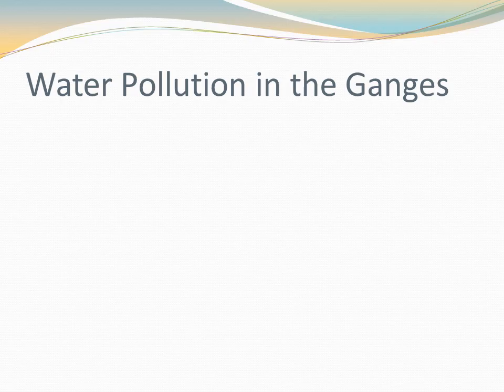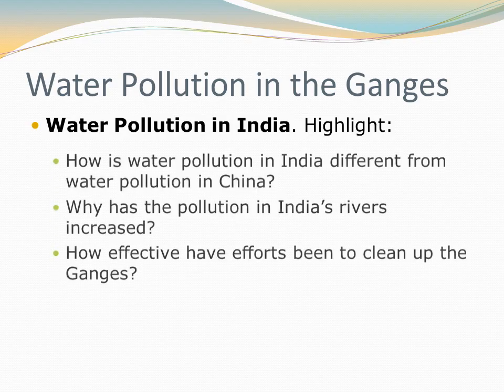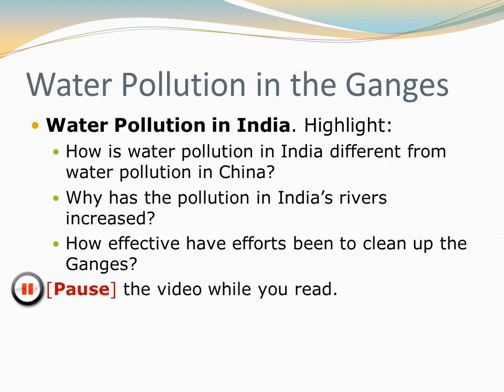Now we're going to read the section about water pollution in India. Remember, the most important river in India — the biggest, most important river — is the Ganges. As we read this section, look for certain things: How is water pollution in India different from water pollution in China? Why has the pollution in India's rivers increased recently? And how effective have efforts been to clean up the Ganges? They have been doing some things to try to clean it up — how effective have those been? Pause the video while you read.